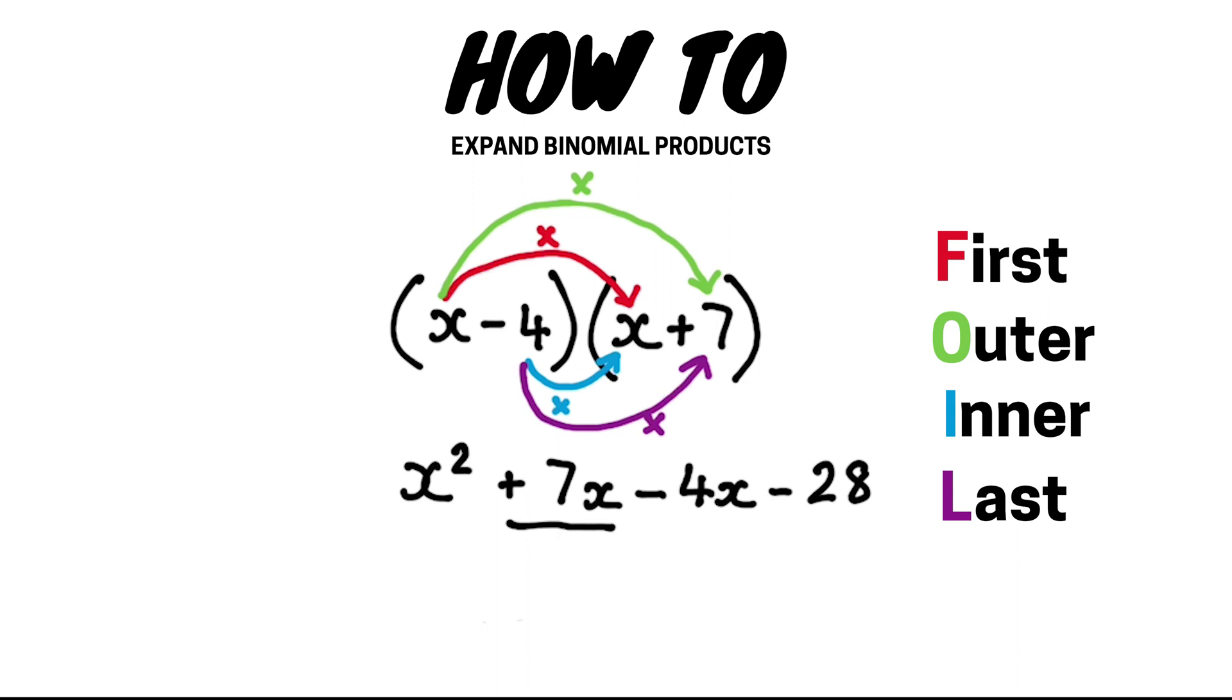Simplify the expression by collecting your like terms and your final expression is x squared plus 3x minus 28.